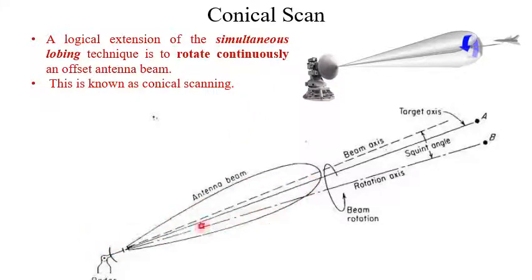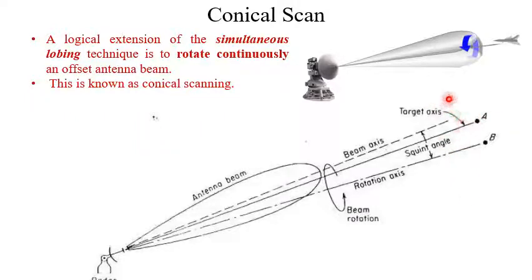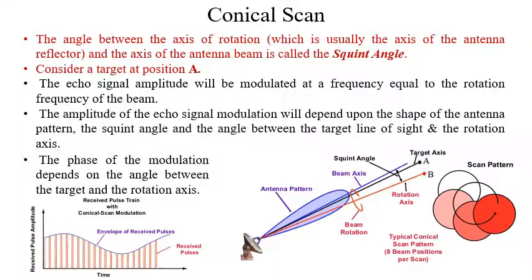If this is the antenna beam and this is the beam axis (the dotted line), we select another axis of rotation. About this rotation axis, the beam axis will rotate. The antenna beam will produce a circle — if we place a screen here, the tip of the antenna beam will trace a circle. The angle between the beam axis and the axis of rotation is called the squint angle.